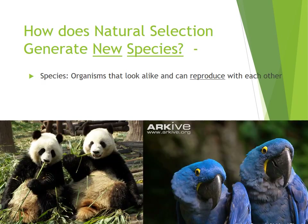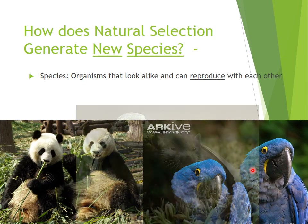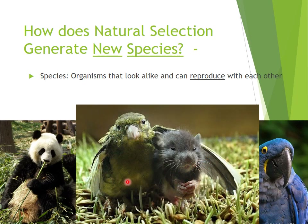Since I keep using the word 'species,' we really should write down what it means. Species are organisms that look alike and can reproduce with each other — that's the scientific definition. These two panda bears look alike and, assuming they're male and female, they can reproduce with each other, so they're the same species. These two parrots are the same species — they look alike and can reproduce. A bird and a mouse are not the same species: they don't look alike and can't reproduce.